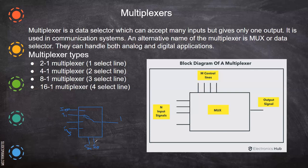So for that we need control lines. Suppose there are eight input lines, then we have three control lines. Always remember: two to the power of the number of control lines gives the number of inputs. An alternative name for multiplexer is MUX — both are the same. This is mainly used for data selection, so we can also call it a data selector. Multiplexers can handle both analog and digital applications.